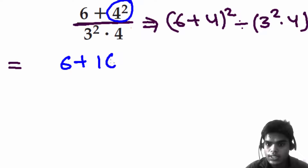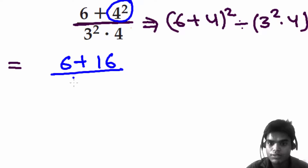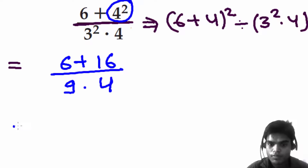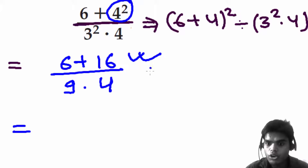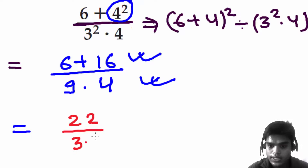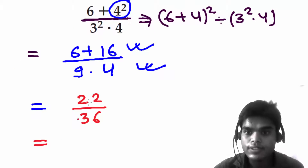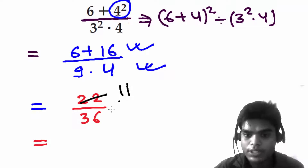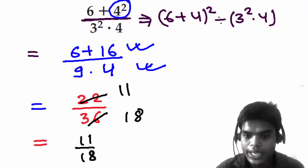Four-squared is 16 and three-squared is 9, times 4. In the numerator: six plus 16 is 22. In the denominator: nine times four is 36. We can cancel by two: 22 over 36 simplifies to 11 over 18. That's our answer.